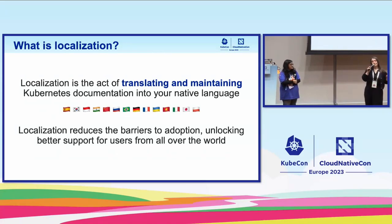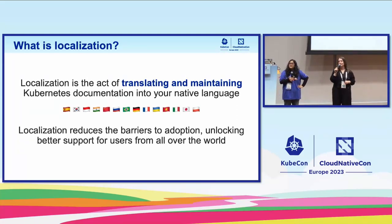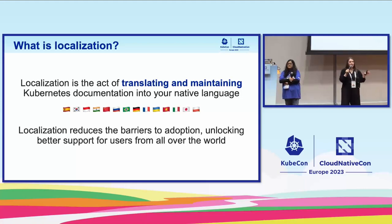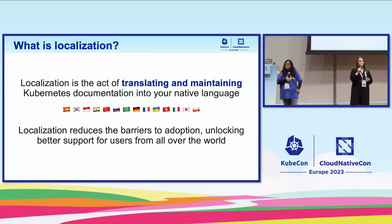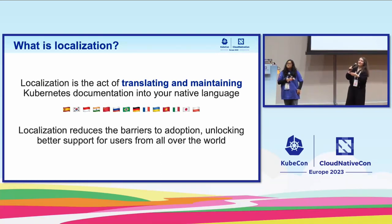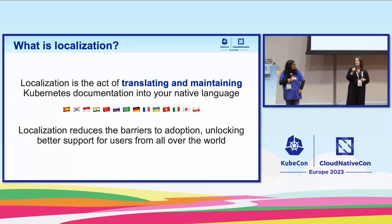So what is localization? All of the flags on the screen are all of the languages that we have our docs translated into. Localization is the act of translating and maintaining the documentation that we have for Kubernetes into your native language. The word 'native language' is really important here because we rely on contributors who know how to translate a term that may have many words or phrases that could be used. We need our docs to be as technically accurate and language-accurate as possible.